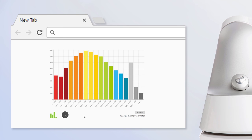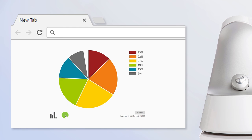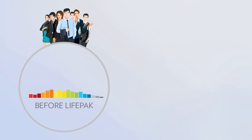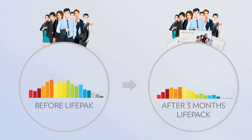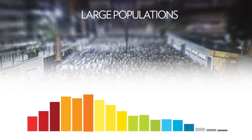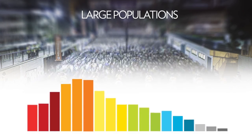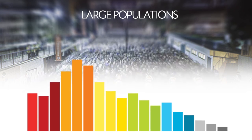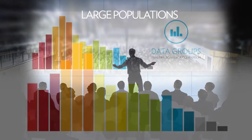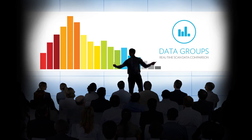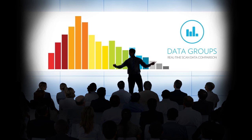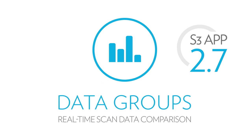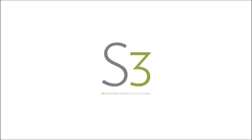At the bottom left of the screen is a pie chart icon. Click on the pie chart icon to show your data groups results as percentages. Data groups are a powerful tool. For example, you could create a data group and scan a group of customers before they start taking LifePack, and then create a different data group to scan them after they have taken LifePack for three months. Or you could create a data group for a large expo or convention and scan hundreds or even thousands of people to learn the average scan score of a whole population. Information can tell a compelling story, and how you use the data groups tool is only limited by your imagination. Download the S3 scanner app version 2.7 and start using data groups to empower your scanner program today.